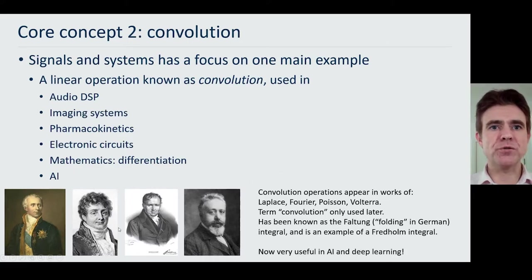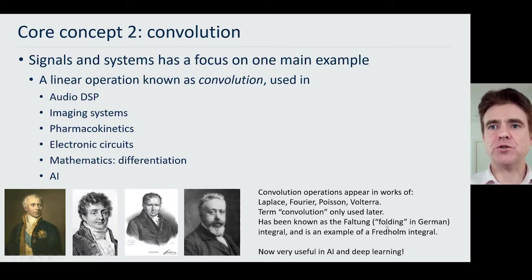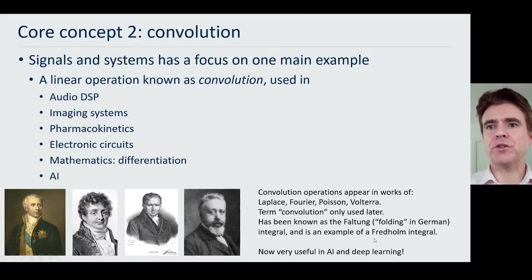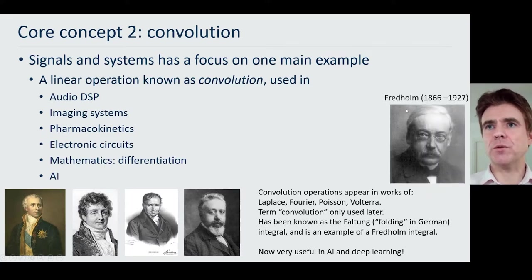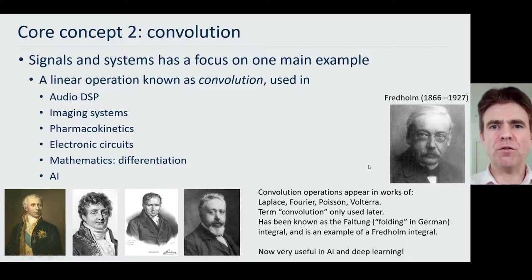The convolution operator appeared in the work of some of the giants in science and engineering: Laplace, Fourier, Poisson, and Volterra. All of these scientists and mathematicians were using the concept of convolution, although they didn't call it that at the time. Historically, convolution is sometimes referred to as the folding integral. It is also an example of a so-called Fredholm integral, named after a Swedish mathematician, Fredholm. This gives a quick outline of some of the history and the central importance of convolution.